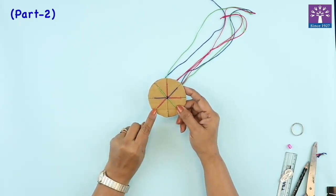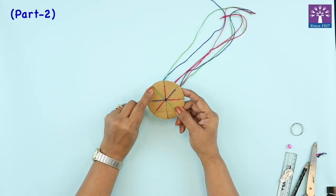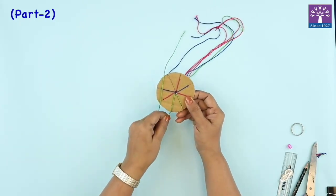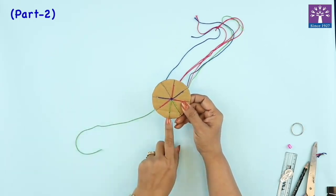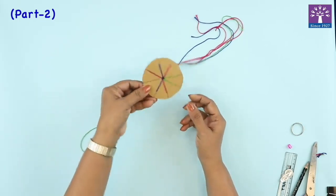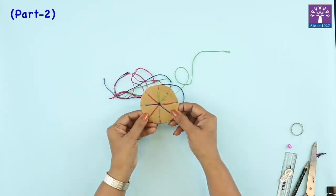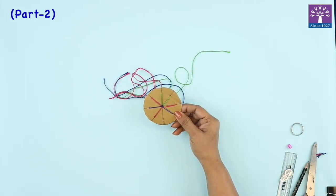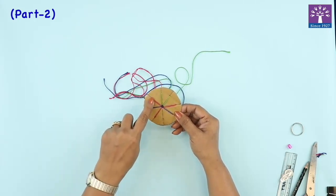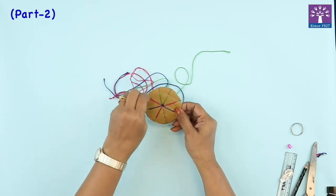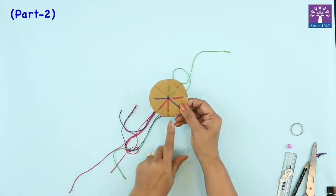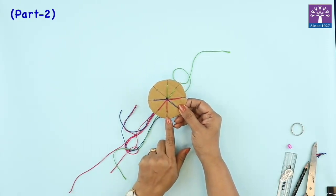I'm going to count 1, 2, 3 and the 3rd thread I'm going to pull out and fix it in the slit that was empty. I will turn my loom around so that this empty slit is facing towards me again. I'll count 1, 2, 3 and take the 3rd thread, remove it, and fix it back in the empty slit that is facing towards me.